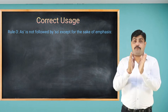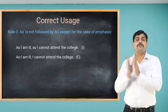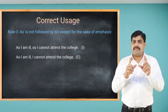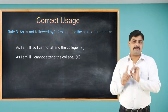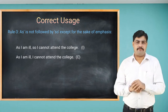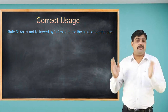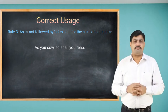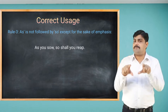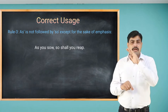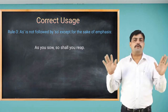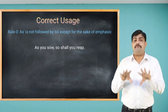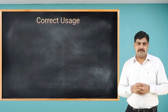Rule number three: the conjunction 'as' is not followed by 'so', except for the sake of emphasis. For example, the incorrect sentence: 'As I am ill, so I cannot attend the college.' Since this is a simple statement, the correct sentence is: 'As I am ill, I cannot attend the college.' However, 'As you sow, so shall you reap' is an exception — here 'so' is used for the sake of emphasis.